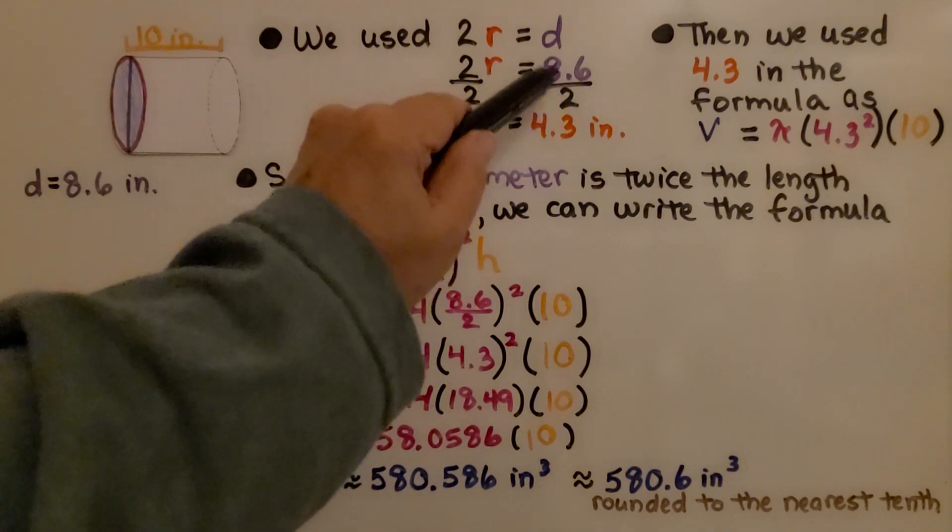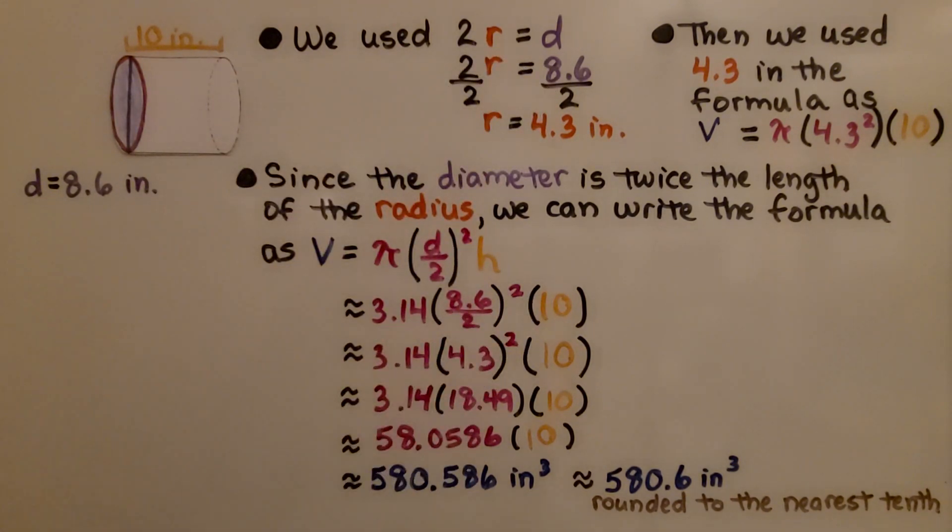That is what we did here anyway. Then we multiply it by 10. That would give us 3.14 times 4.3 squared times 10, which would give us 3.14 times 18.49 times 10.